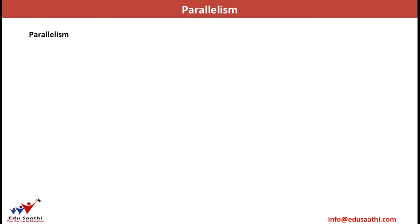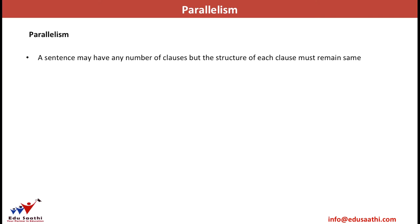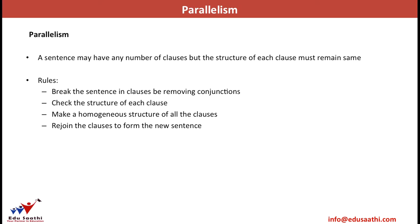Now we move back to the discussion of parallelism. The concept of parallelism basically focuses on a very simple thought: a sentence may have any number of clauses, but the structure of each clause must remain the same. The methodology is simple — first you break the sentence, then check whether the structure of each clause is similar or different. If it is different, make the structures the same, then rejoin the clauses using the same conjunctions to get a grammatically coherent sentence.